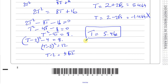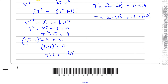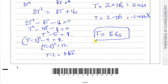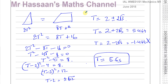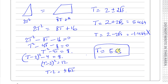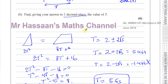The question asks for the answer to one decimal place, not three significant figures. So the correct answer is T = 5.5 seconds. If you wrote 5.46 you would lose the mark, because you must follow the clear instruction given in the question.